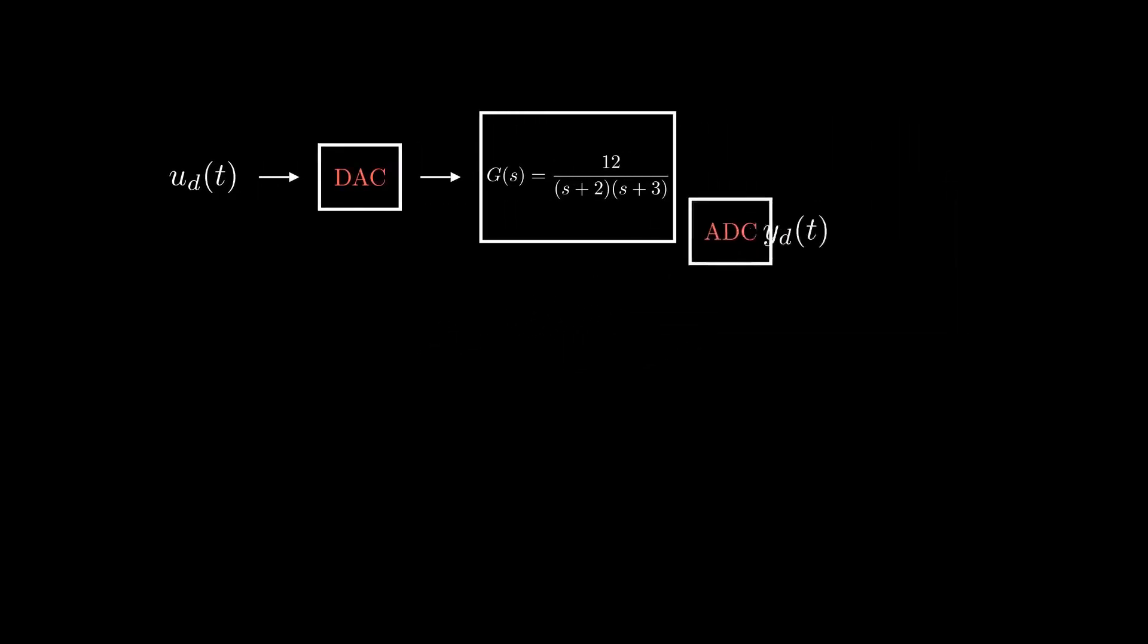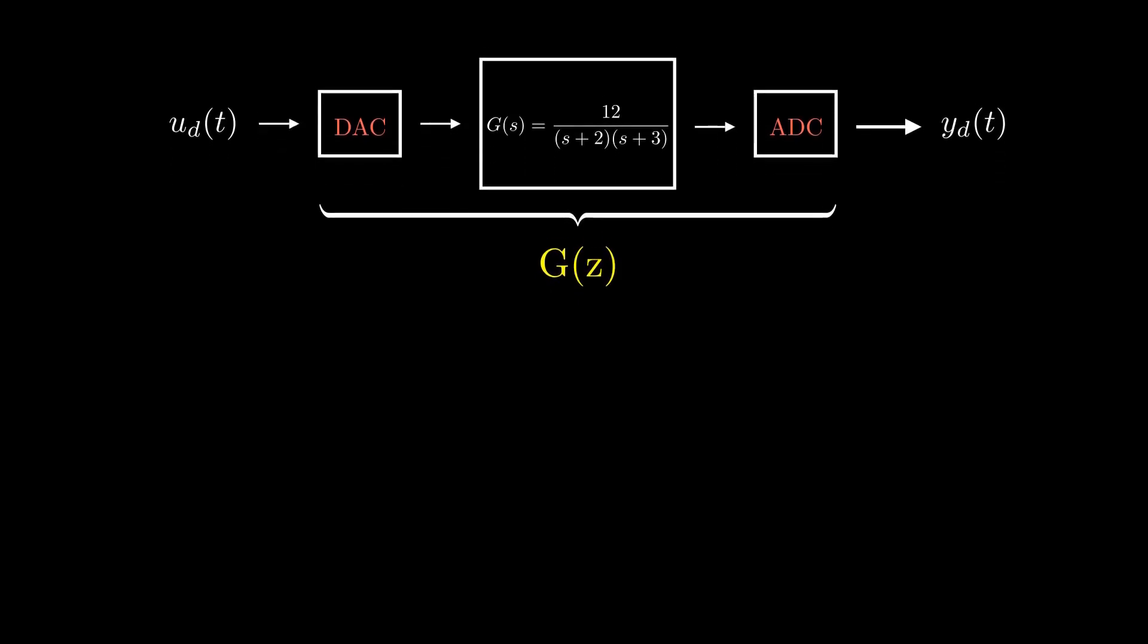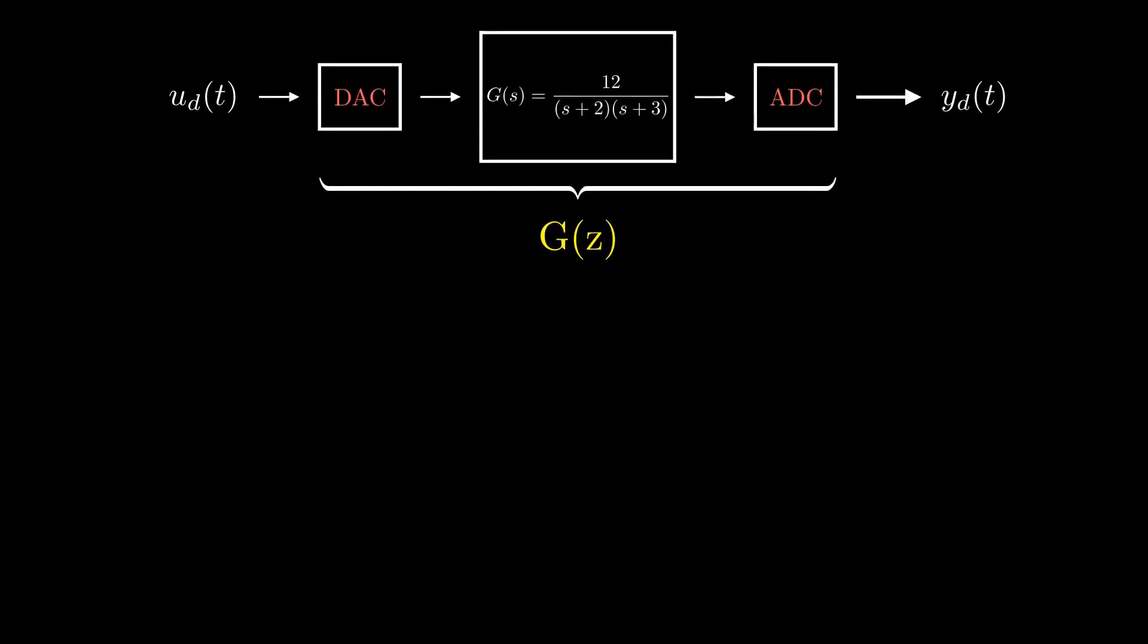Rearranging the new system, since the input and output of the system are discrete signals, we can model the system using a discrete transfer function denoted as G(z). G(z) represents the relationship between input and output signals in z domain.